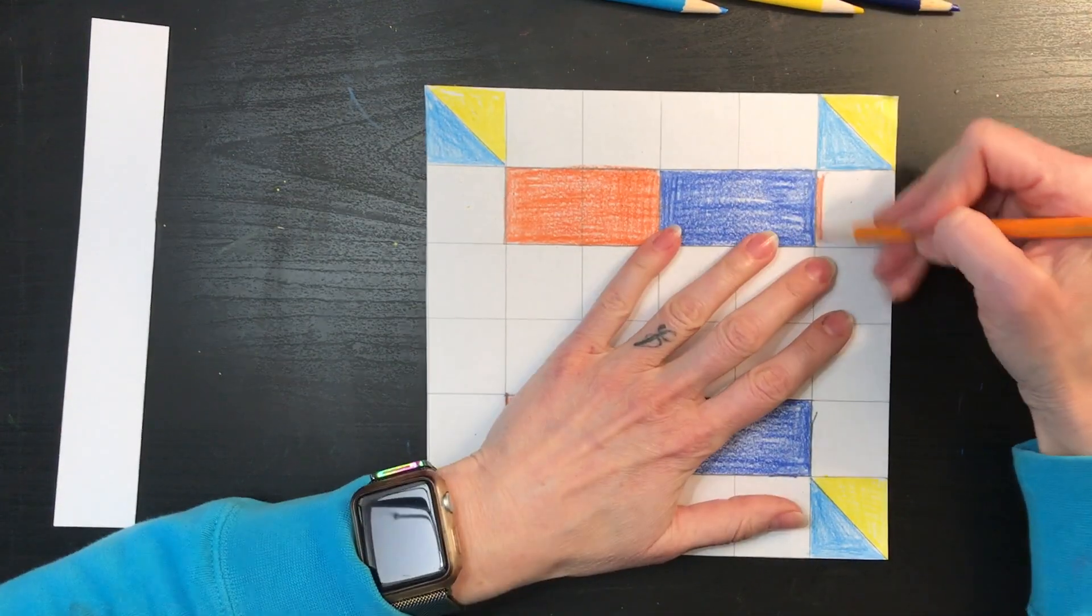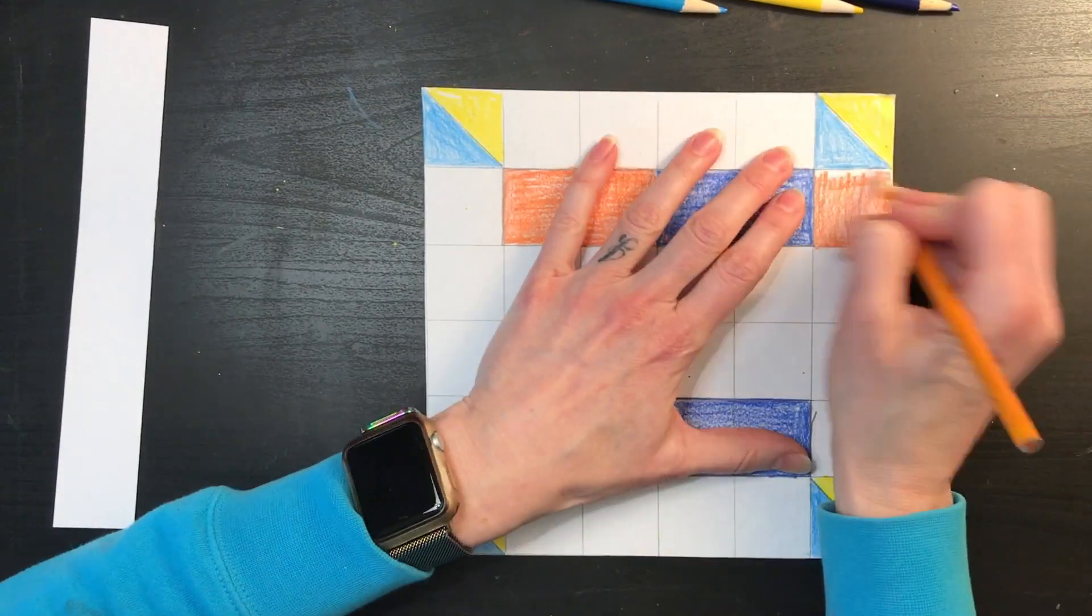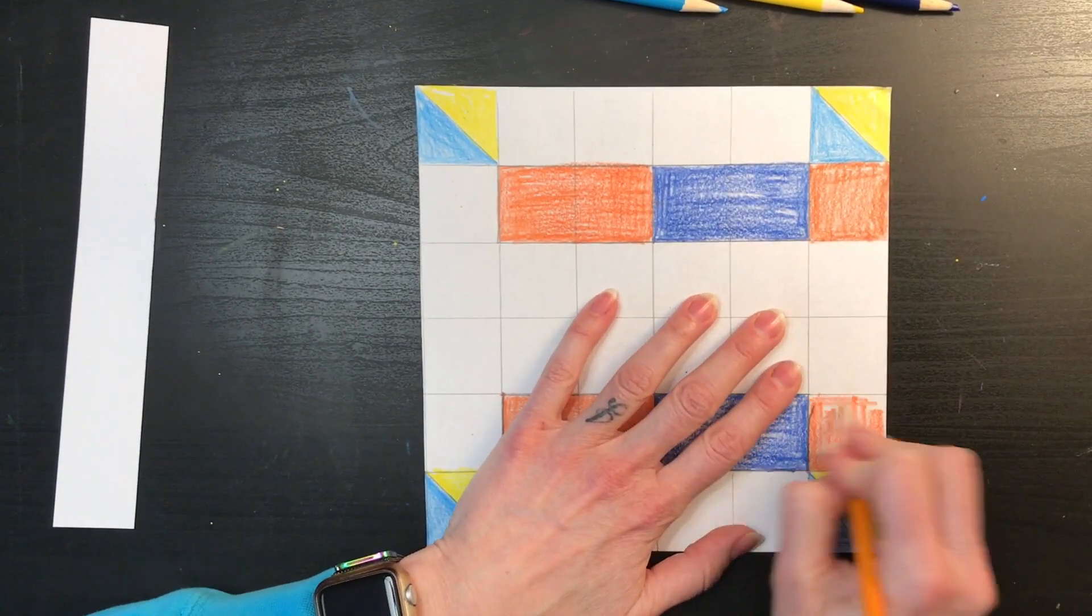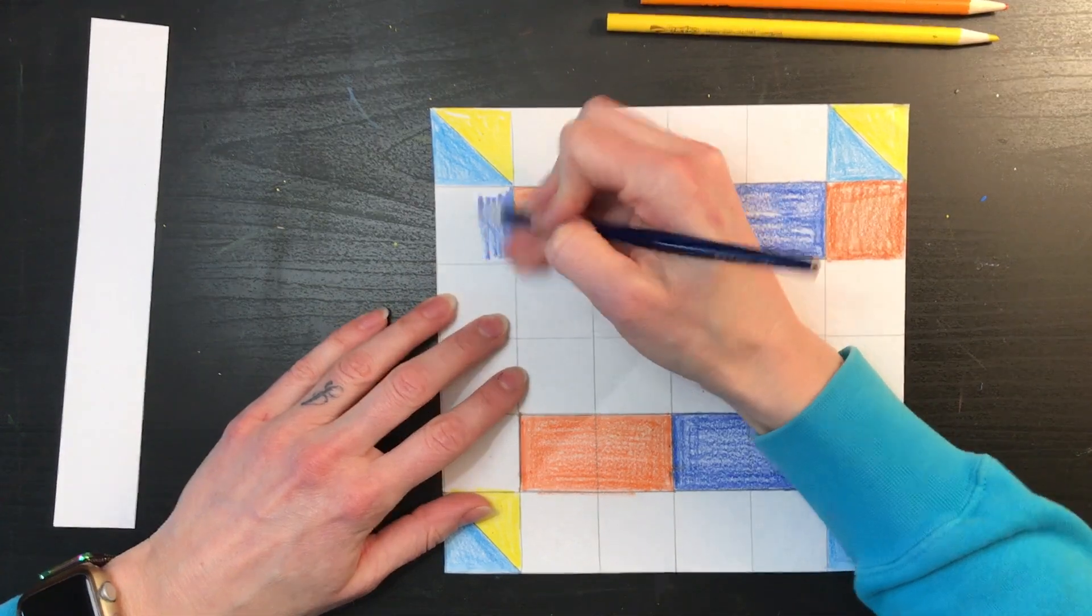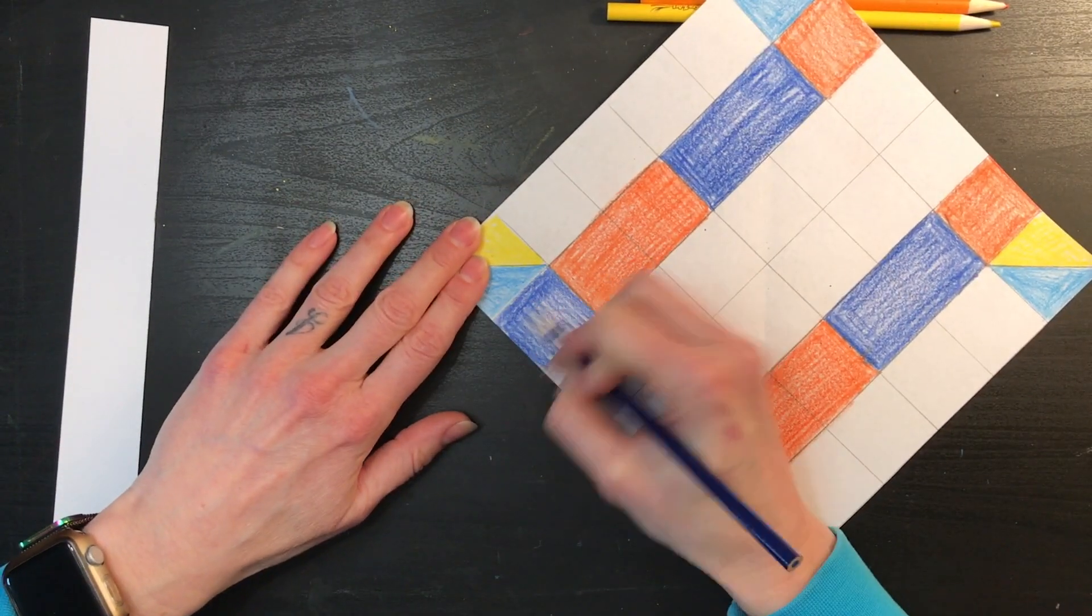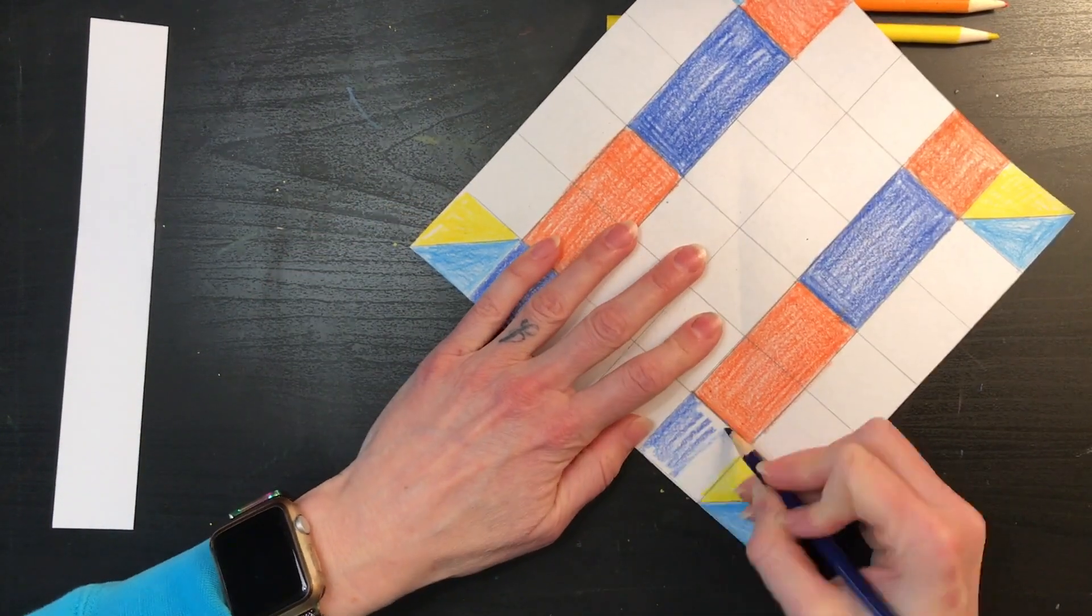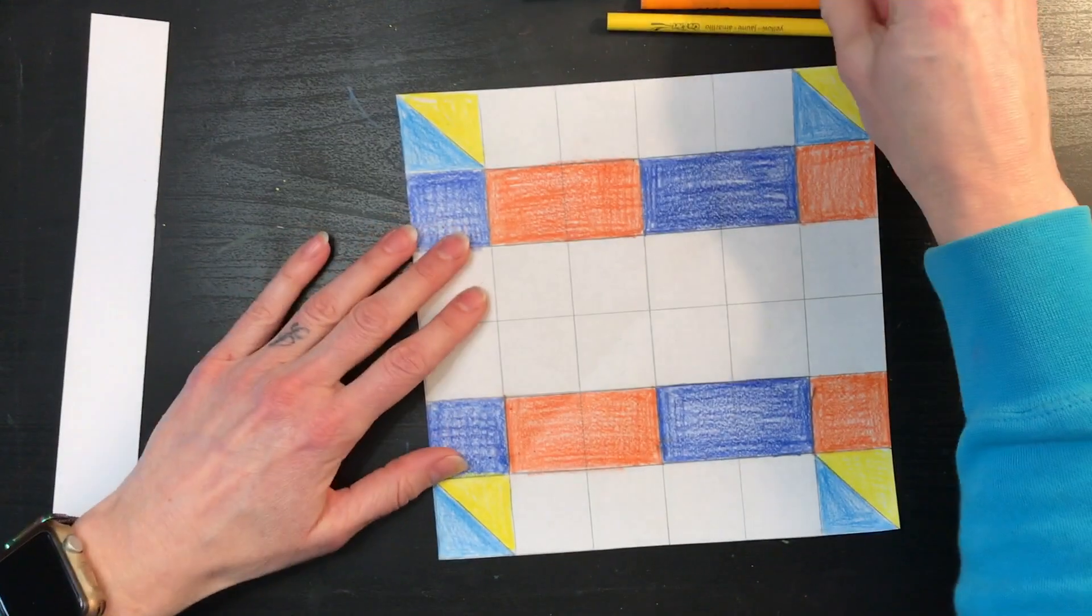All right, and as you might recall, if there are any spaces that you want to leave just a square, you can just color those in.